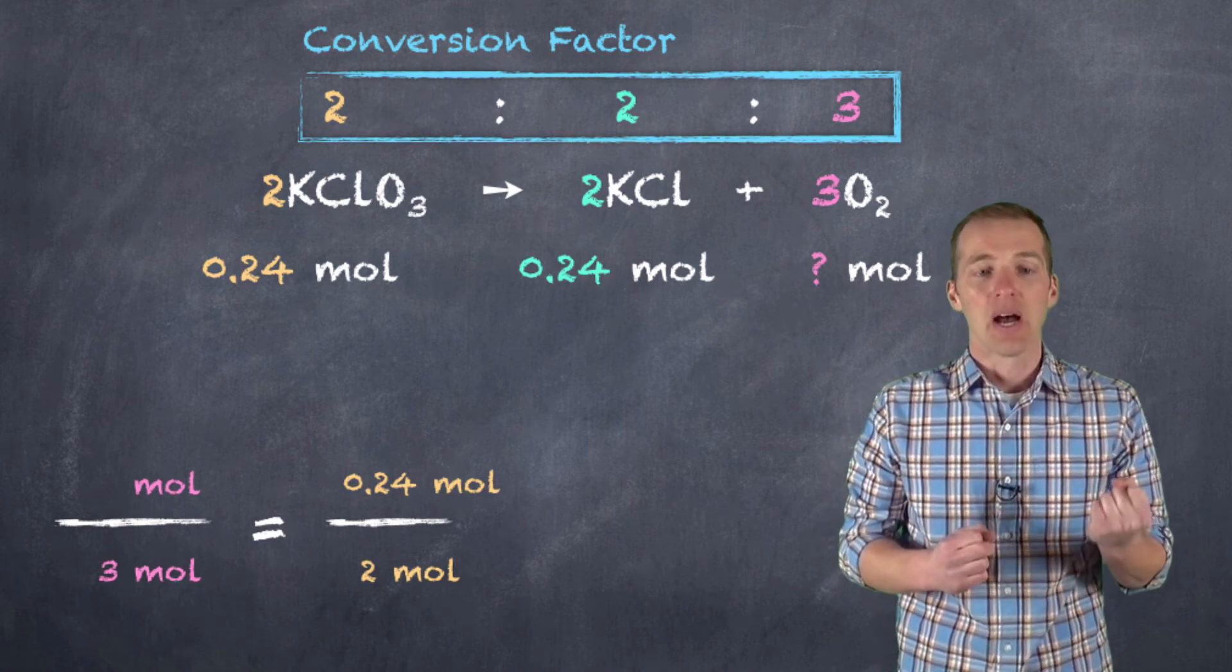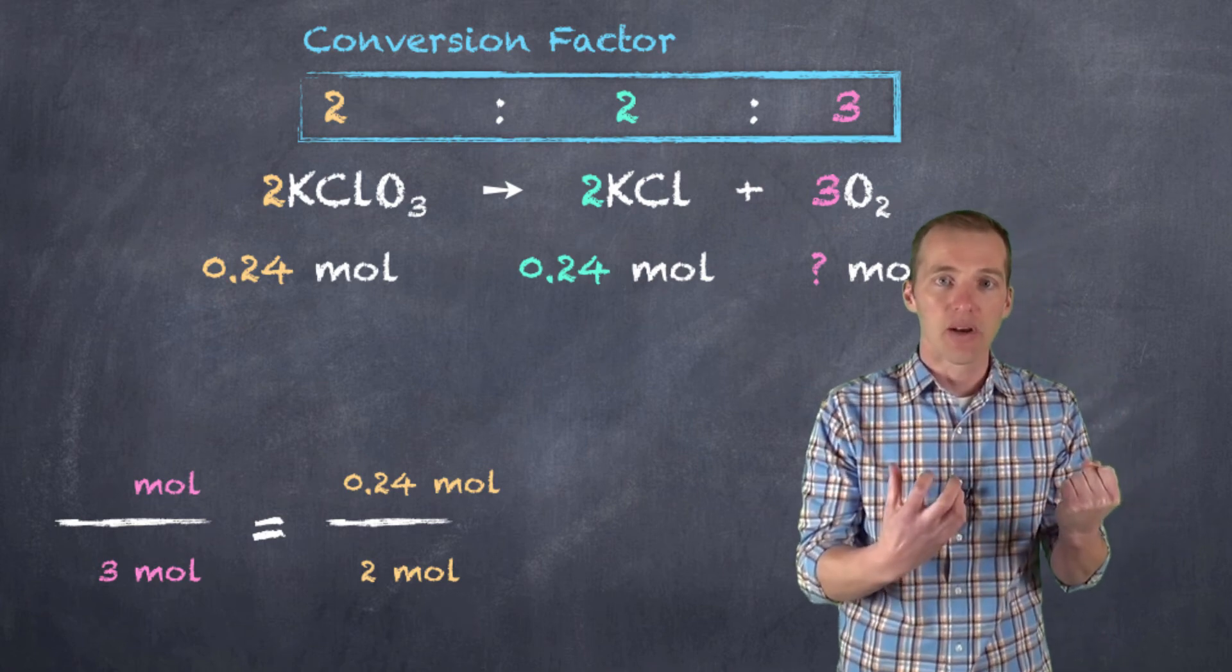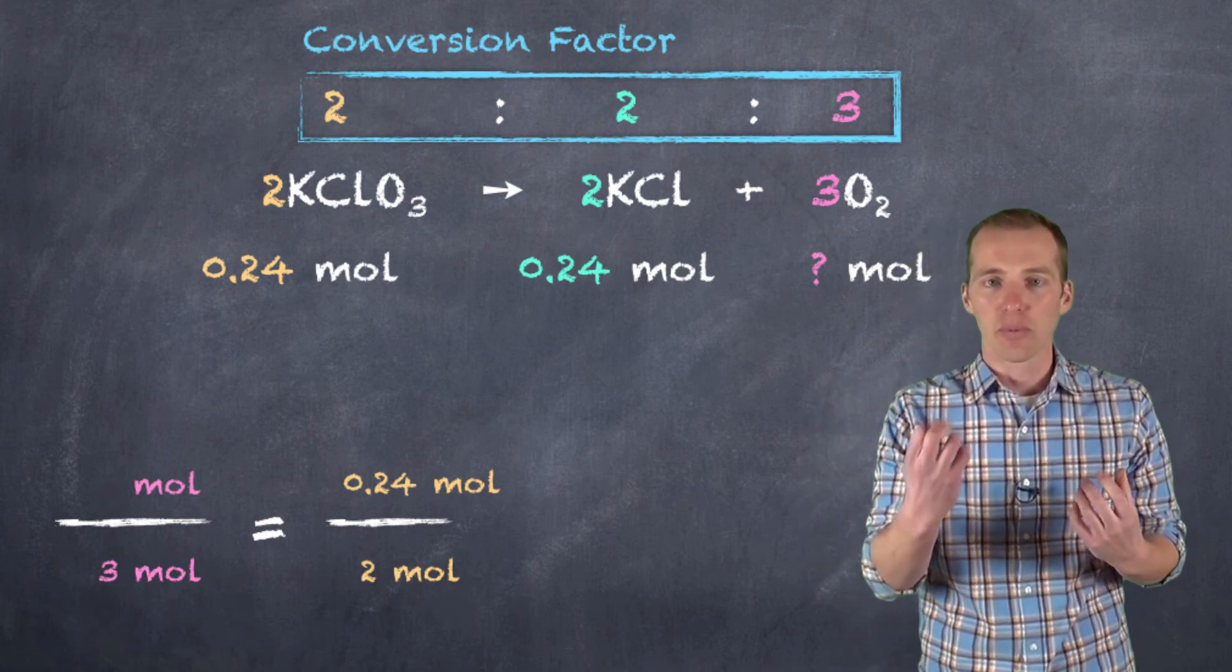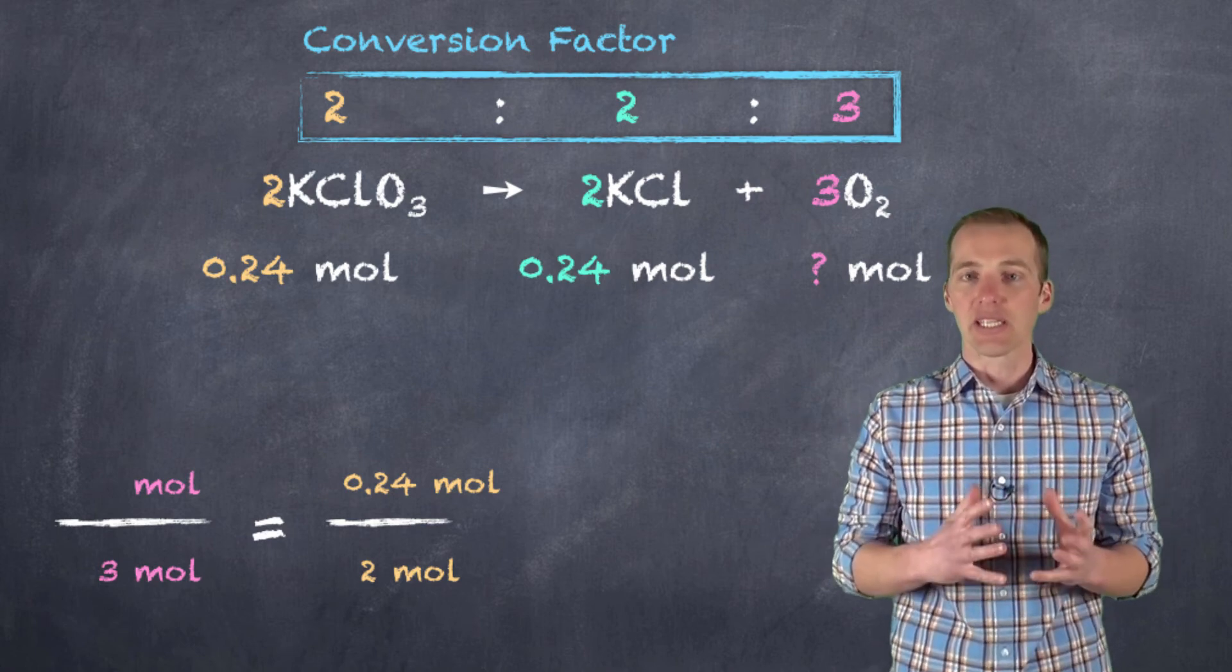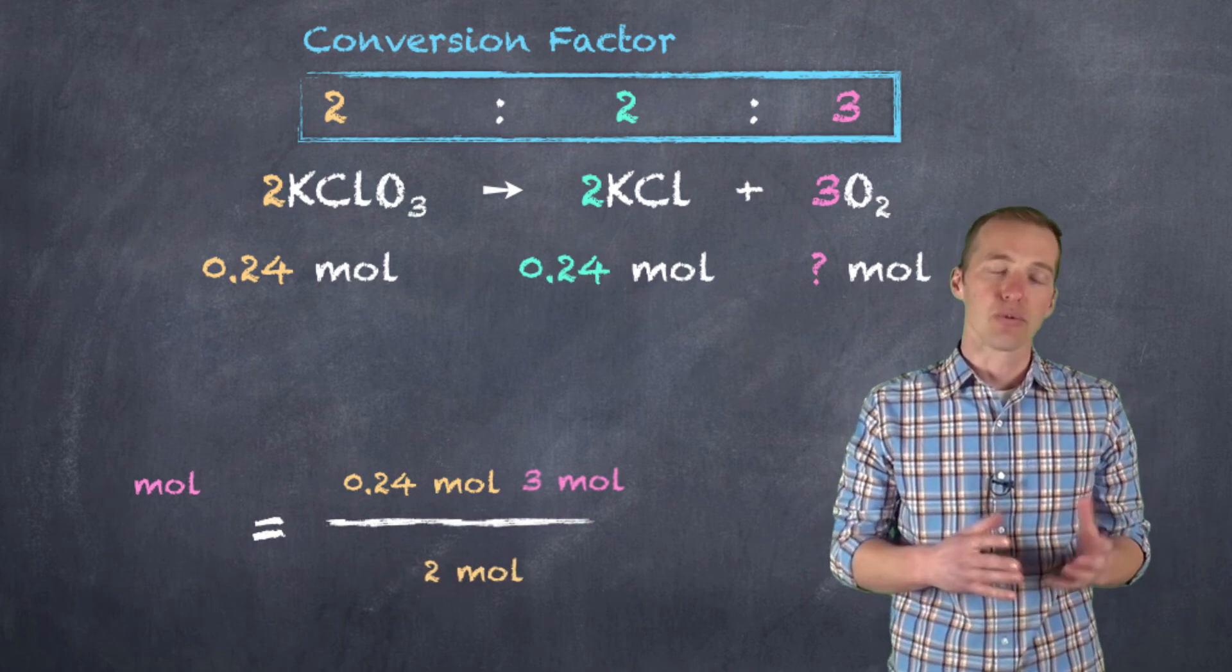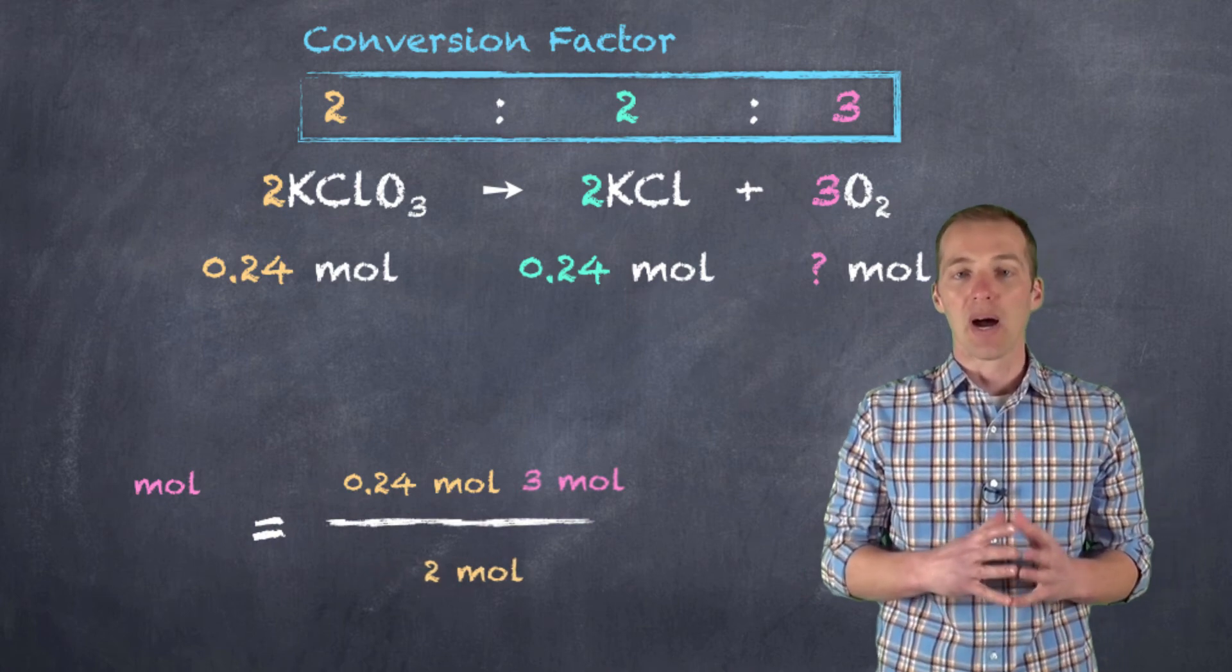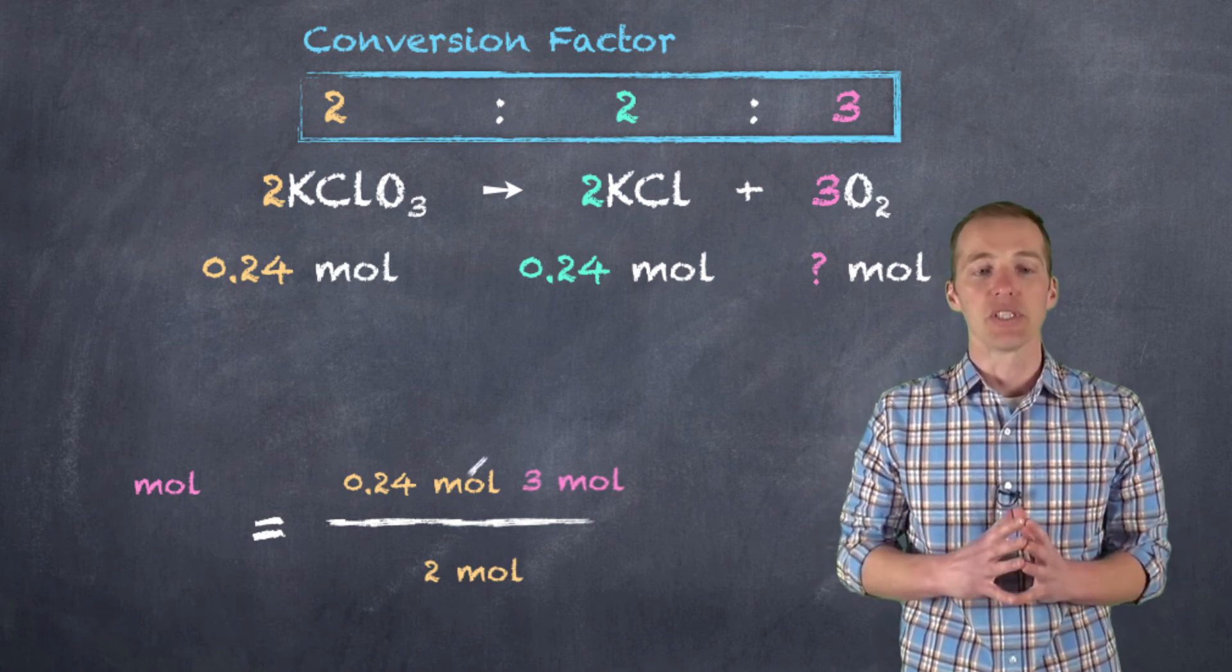So again, on the bottom, I know that three moles of my unknown produce two moles of my known. And if I have 0.24 moles of my known, how much unknown am I going to produce? So in going through this calculation, again, I can take the denominator of three moles, move it up either through cross multiplication or by multiplying both sides to eliminate three moles, however it is you want to solve this equation.